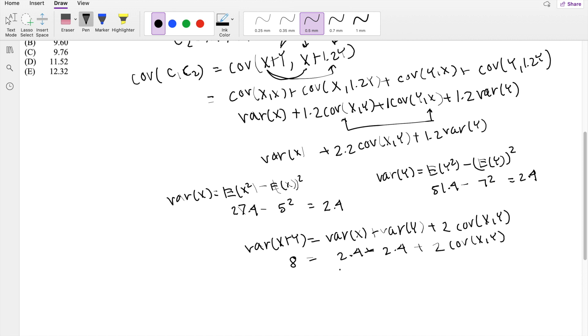4.8. 8 minus 4.8, it's going to be 3.2 is equal to 2 times covariance of X and Y. That means the covariance of X and Y is just equal to 1.6.